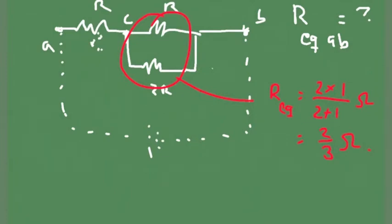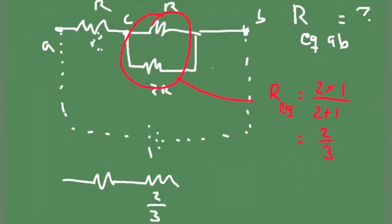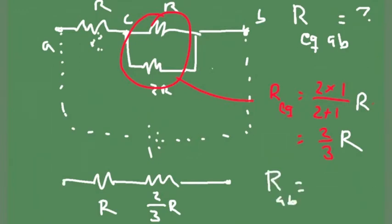Once I replace those with 2/3 R, the net resistance between A and B is going to be R plus 2/3 R. So I place a resistor of 2/3 R here in the circuit. The equivalent resistance between A and B is therefore R plus 2/3 R. That's the general procedure — you simplify the circuit one step at a time.